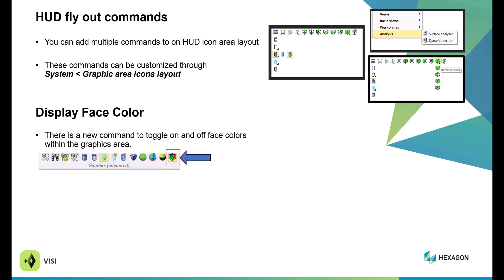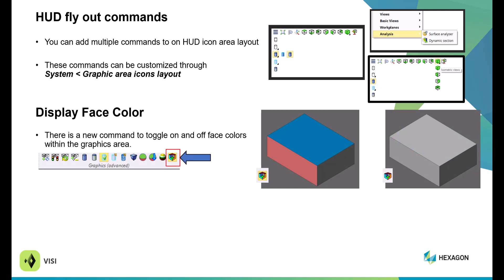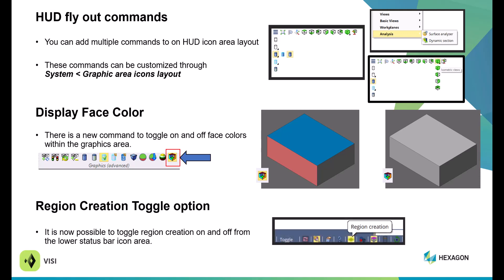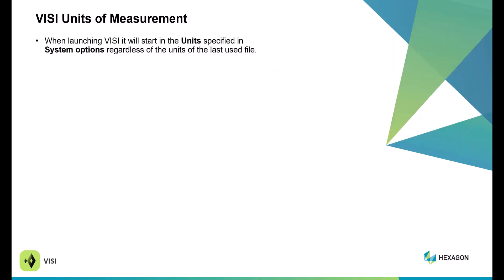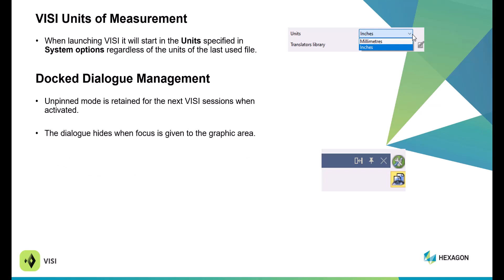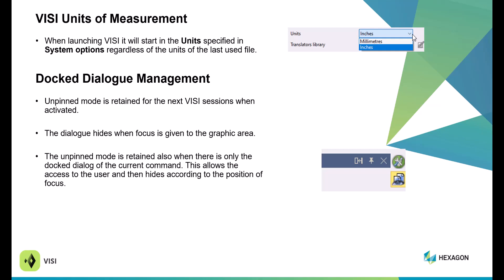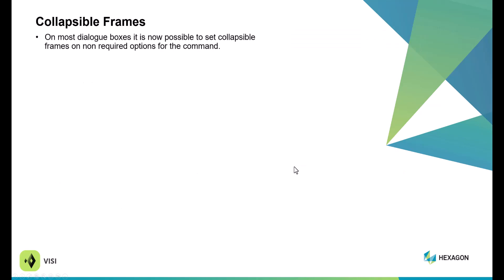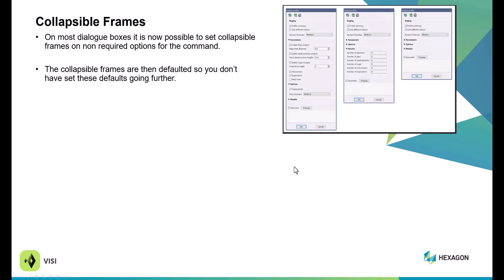There's a new toggle switch button called Display Face Color, which allows you to toggle face colors on and off. There's also a new toggle switch for region creation, which you can toggle on and off to view closed areas on the work plate. The VZ units of measurement are going to be saved with your default measurements, not the last file used. Within docking dialog management, there's a new icon to force a floating dialog box or not — a new command to dock and undock your area without having to do a right-click. There are also new options within collapsible frames within any graphics icon command, letting you expand and collapse different frames for commands you use frequently versus not, making the dialog box smaller.